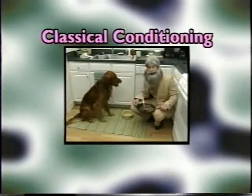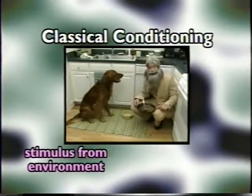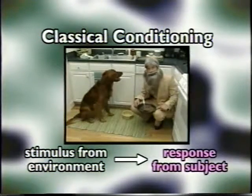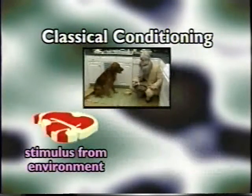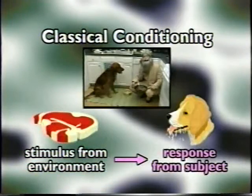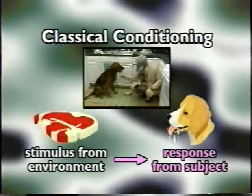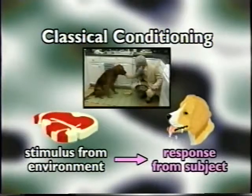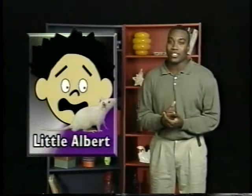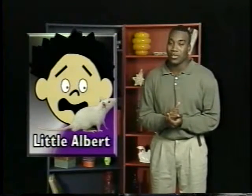In classical conditioning, first there's a stimulus from the environment, then you get a response from the subject. The meat was the stimulus from the environment, and the dogs responded by salivating. Back at the beginning of the 20th century, John Watson experimented on a kid named Little Albert to find out more about conditioning humans. Watson's experiments would probably not be repeated today because they're considered pretty unethical.